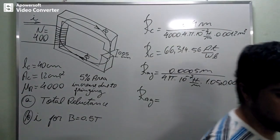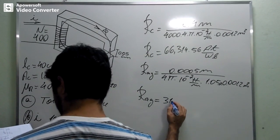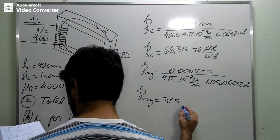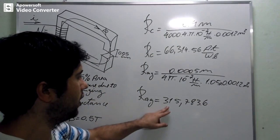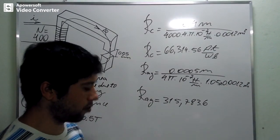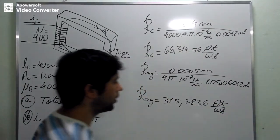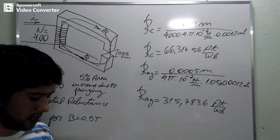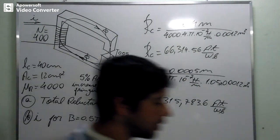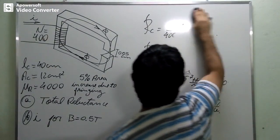And I already did this calculus. And I found the number equal to 315,783.6 ampere turns per Weber. These are the numbers that we are going to use. And we have to add them up. And when we add them, we find the total reluctance.